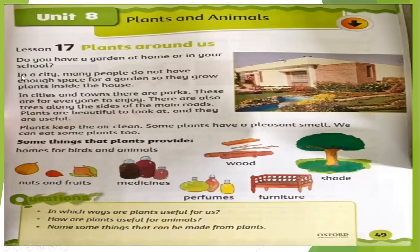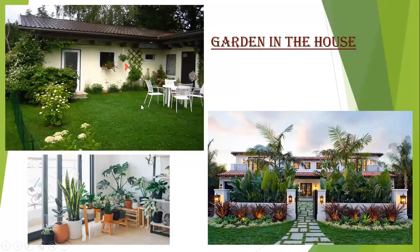In a city, many people do not have enough space for a garden, just like us. So they grow plants inside the house. I will show you — if there is space, there is a garden outside, including the house area. Sometimes the area of houses is very big, so they make a small part of it as a garden. Many people grow plants in a pot and put them inside the house because plants are very important for us.